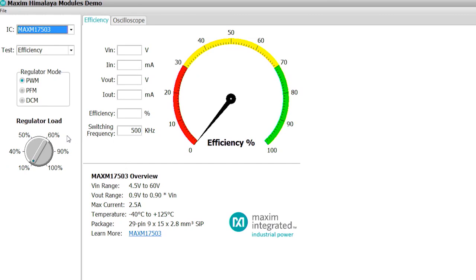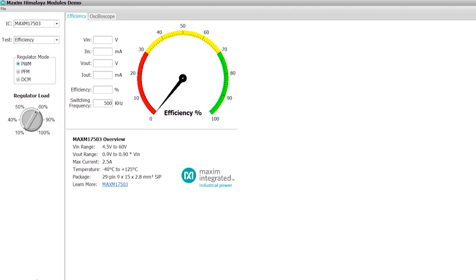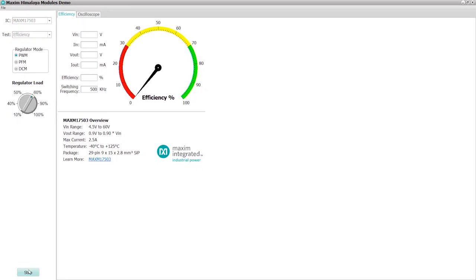But as you can see here, we have the Max-M-17503 part that you were just holding. And, for example, you want to run it at 60% load for a 24-volt input nominal voltage. You can see here in real-time what the efficiency would be. As you can see, it's more than 90% efficiency. So the performance is something we haven't compromised on. Wow. That's impressive.